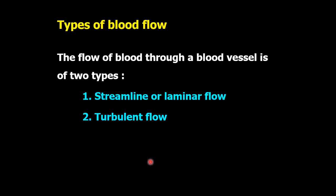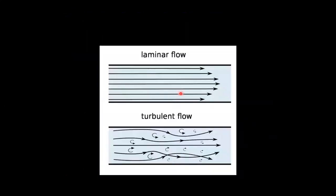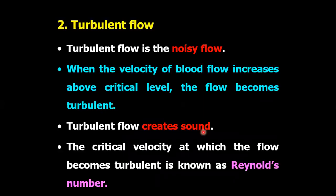There are two types of blood flow: one is streamline or laminar flow, and another is turbulent flow. Streamline or laminar flow is a silent flow — it moves parallelly and doesn't produce any sound within the vessels. Here is a figure showing the laminar flow and turbulent flow. In laminar flow the blood flows parallelly, but in turbulent flow it has ups and downs. Turbulent flow is the noisy flow. When the velocity of blood flow increases above a critical level, the flow becomes turbulent and it creates sound.